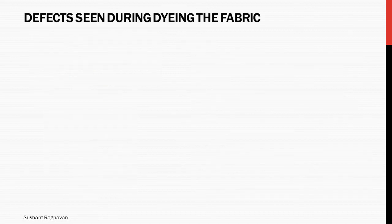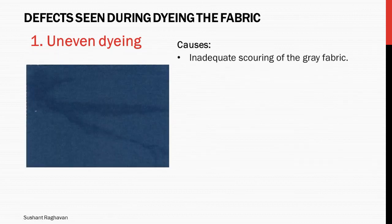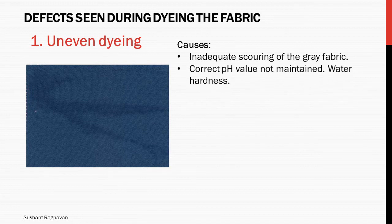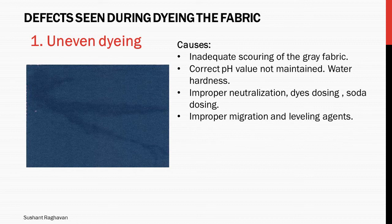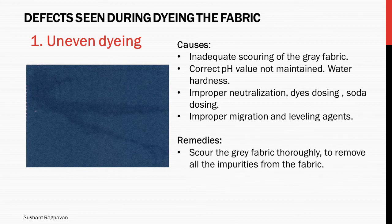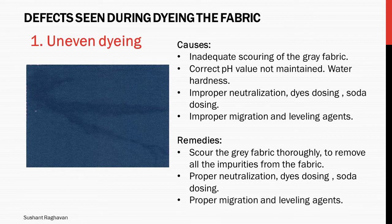Defect seen during dyeing the fabric. Uneven dyeing. Causes: inadequate scouring of the grey fabric, correct pH value not maintained, water hardness, improper neutralization, dye dosing, soda dosing, improper migration and leveling agents. Remedies: scour the grey fabric thoroughly to remove all impurities. Ensure proper neutralization, dye dosing, soda dosing, and proper migration and leveling agents.